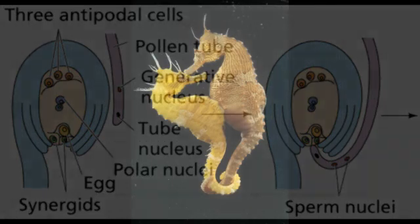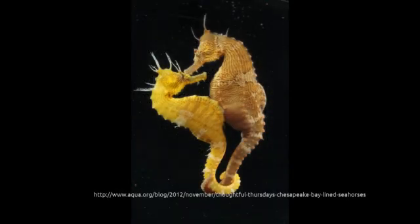I like to bring in the example of the seahorse — and actually many fish have this dynamic — where the so-called male receives eggs from the female and fertilizes them inside his body, incubates them, and gives birth to them, or lays those eggs. And the reason we call him male is that what he grows inside is smaller than the reproductive cells of the female seahorse.